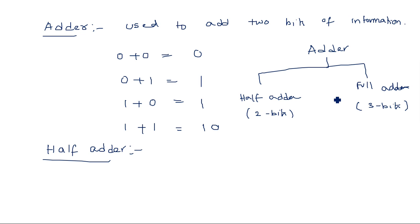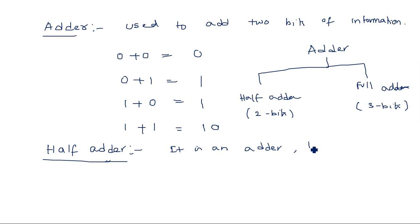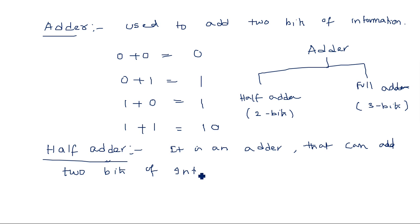If you want to add four bits of information, you need to use a half adder followed by another full adder, or a full adder followed by another full adder or half adder. A half adder is an adder that can add two bits of information.